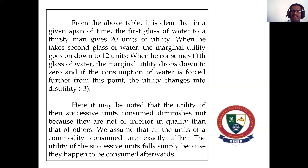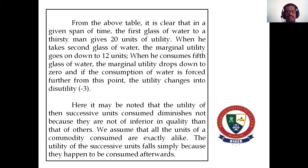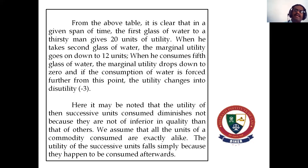From the above table it is clear that in a given span of time, the first glass of water to a thirsty man gives 20 units of utility. When he takes the second glass, marginal utility goes down to 12 units. When he consumes the fifth glass, marginal utility turns to zero. If consumption of water is forced further to the sixth point, utility changes into disutility — that is, minus three (negative). The total utility of the commodity increased but the marginal utility of the commodity decreased.